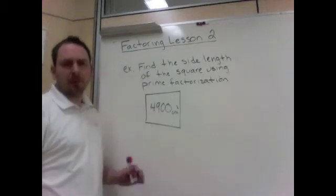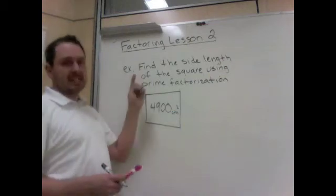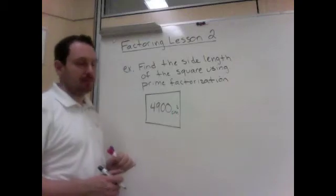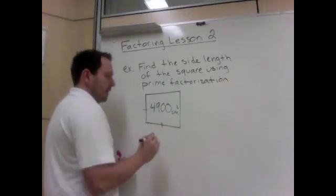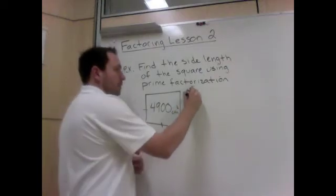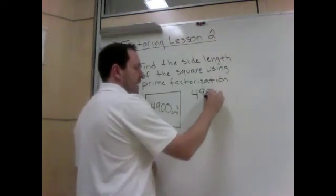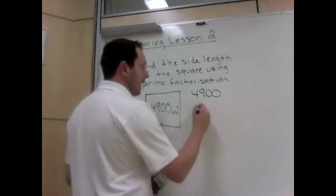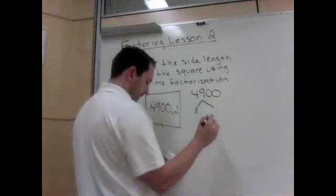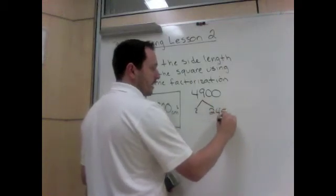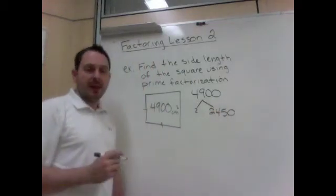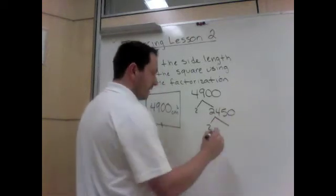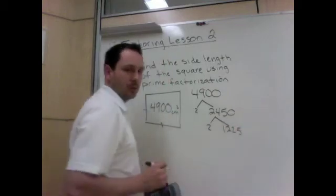So here's another example where we're going to apply what we know. Find the side length of the square, so this given square, using prime factorization. So it is a square, even if I haven't drawn it perfectly. So prime factorization, we start with 4,900, and now we need to find all of its prime numbers. So 4,900 is divisible by 2. It is 2 times 2,450. That is an even number, so it divides by 2. It is 2 times 1,225.